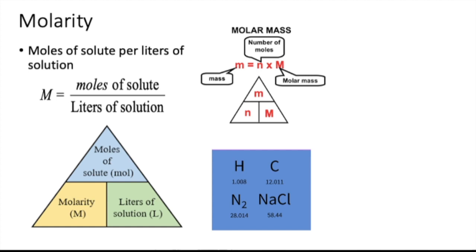Let's take a look at molarity. It is defined as moles of solute per liter of solution. You can also use the magic triangle. If you are looking for molarity, the formula is moles of solute per liter of solution. If what you need is moles of solute and you are given molarity and liters of solution, the formula becomes molarity times liters of solution.